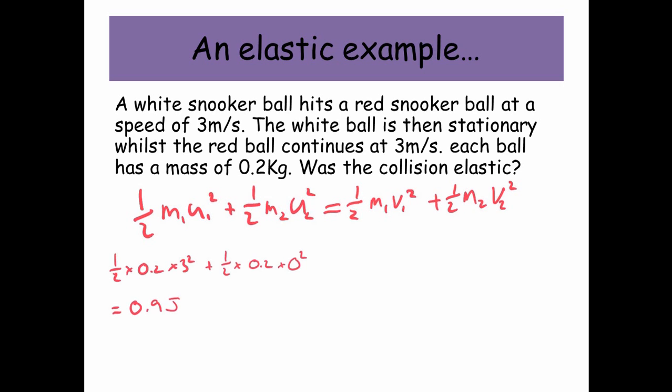Okay, so to begin, we've got a half times 0.2 times 3 squared plus a half times 0.2 times 0 squared. Remember, the red ball is stationary. So the total kinetic energy of the system is 0.9 joules.